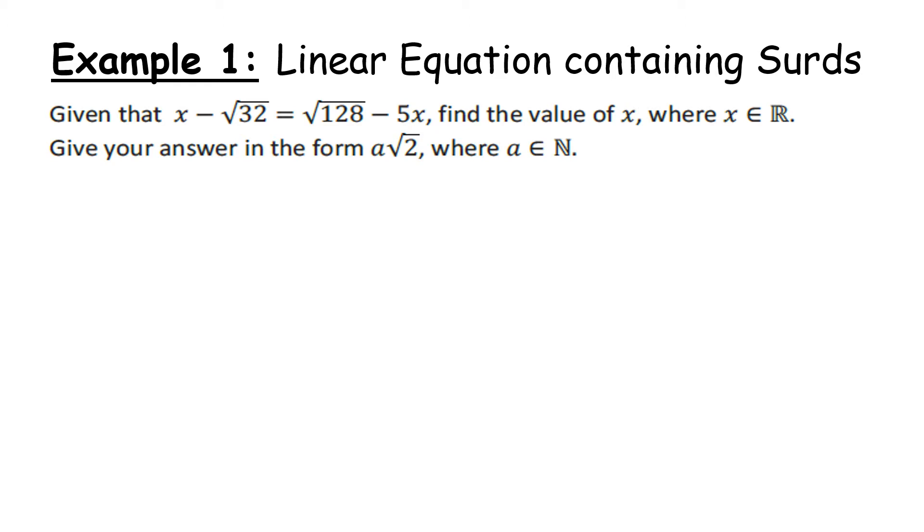This came from the actual Leaving Cert paper and although it looks a little bit complicated, we have a very straightforward linear equation. The number which we're used to is instead irrational rather than rational. So what we're going to do is get all of our letters on one side and the numbers on the other. So let's start with our equation. I'm going to add 5x to both sides, so I get 6x here, and I'm going to add the √32 to both sides.